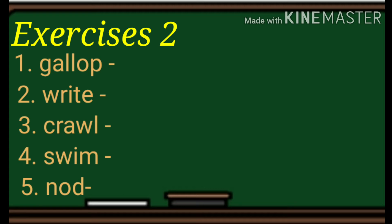Let us check your answers. Number one — gallop is an example of locomotor movements; the movements are going from one place to another place. Number two — right is non-locomotor; the movement is done in the same place. Number three — crawl is locomotor; the movement is done from one place going to another place. Number four — swing is an example of locomotor movements; the movement is done from one place going to another place. Number five — nod is an example of non-locomotor movements; the movement is done in the same place or in a stationary place.